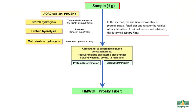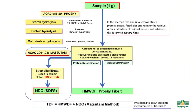This value — now referred to as high-molecular-weight dietary fibre — formed the basis of the Prosky method, AOAC method 985.29, which was subsequently modified by the Matsutani group to develop AOAC method 2001.03. In this modification, the ethanolic filtrate is concentrated, desalted and chromatographed on TSK columns to determine the amount of non-digestible oligosaccharides, referred to as SDFS. The high-molecular-weight dietary fibre is determined according to the Prosky method.